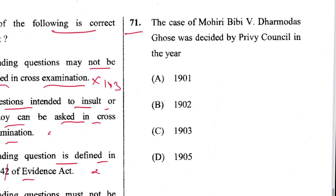Question 71: The case of Mohri Bibi vs. Dharmodas Ghosh was decided by the Privy Council in the year 1903. C is the answer.